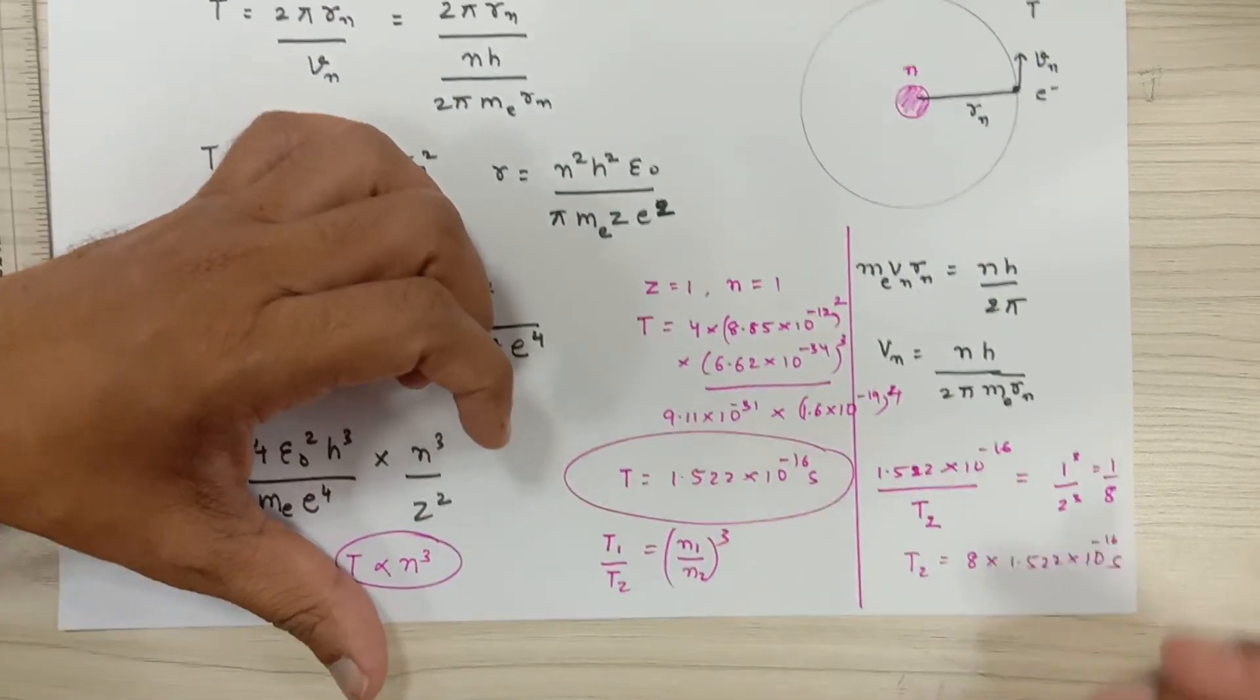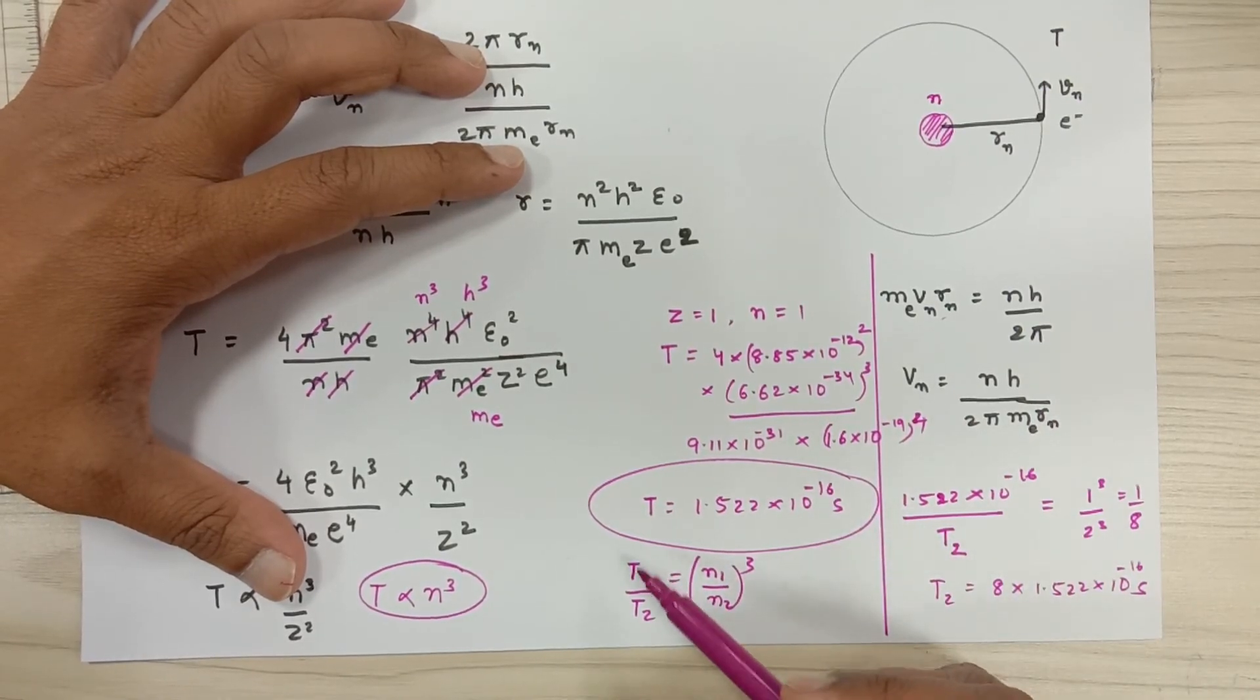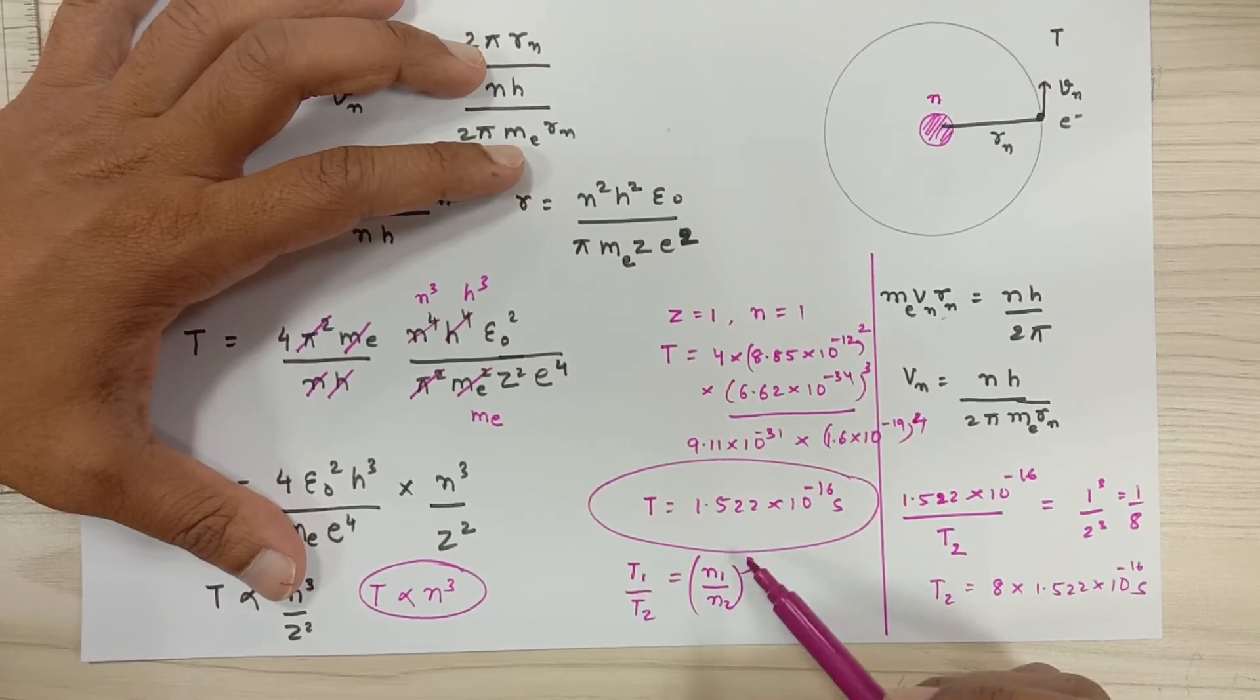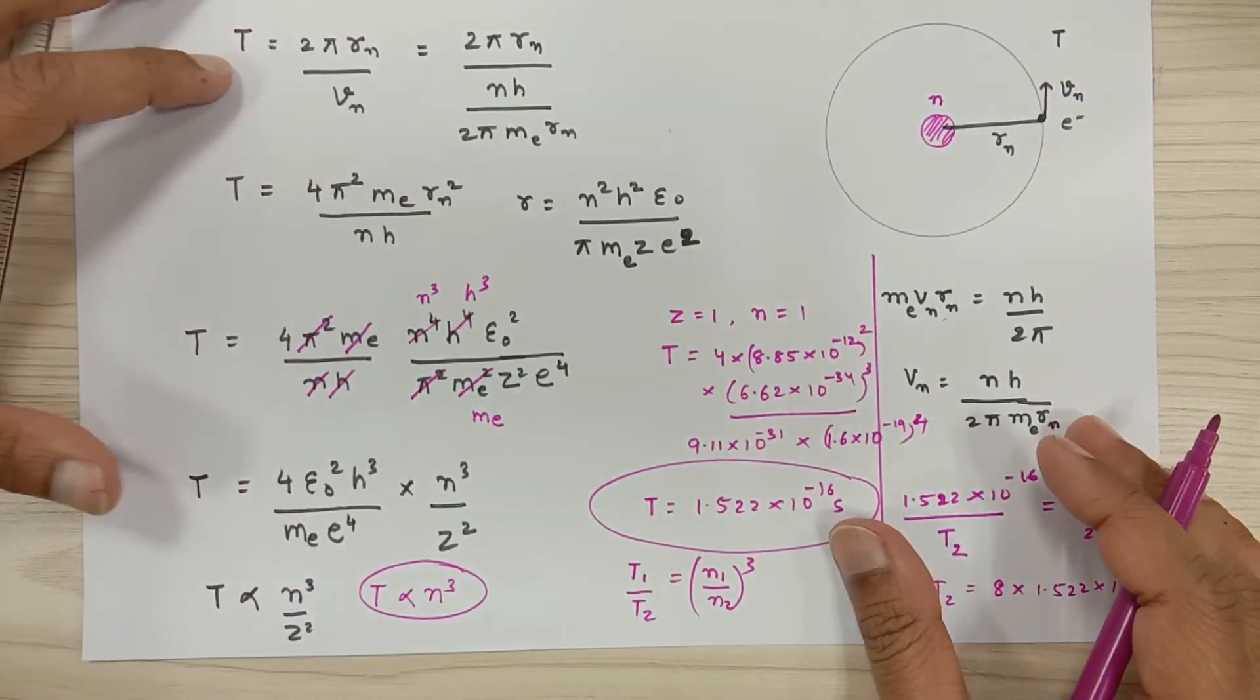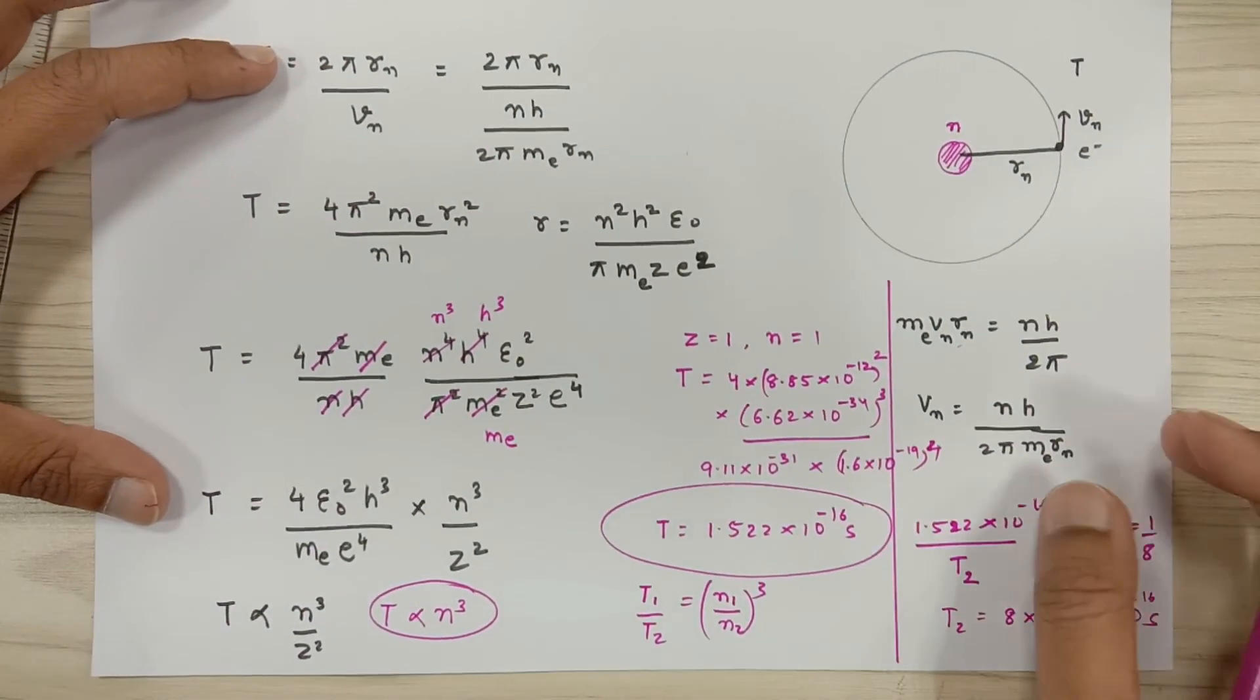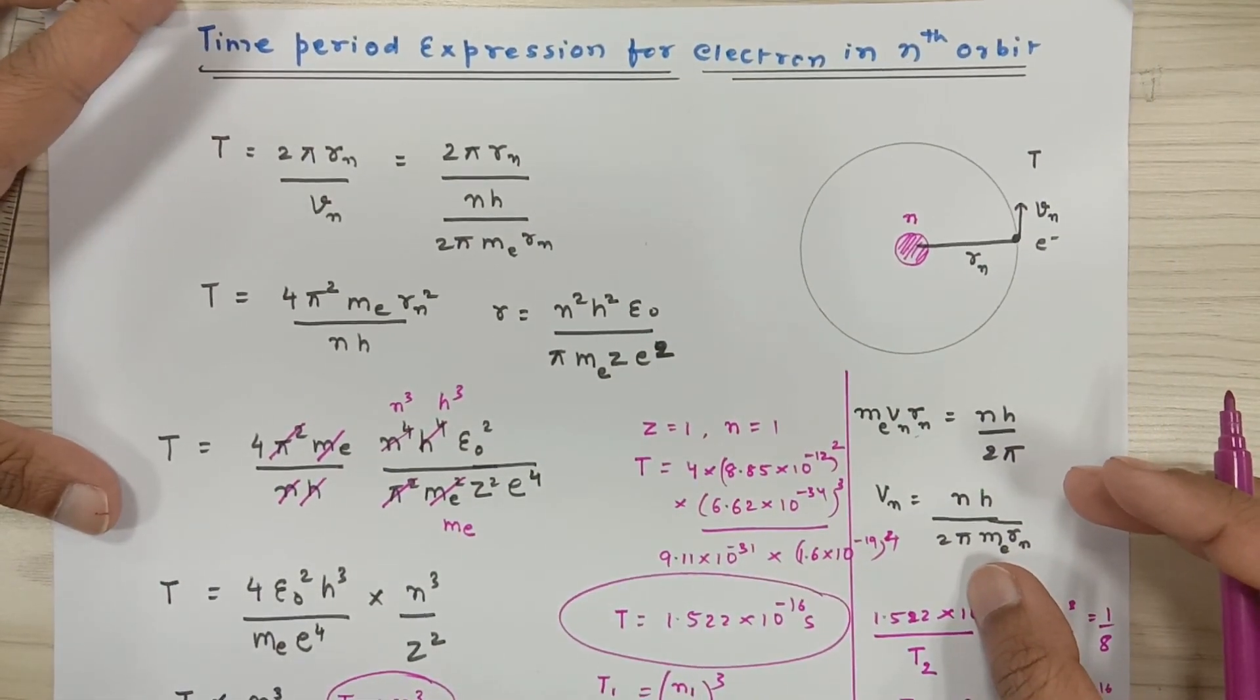In the same way, if you ask me to find out the electron's time period in the third orbit, then I'm going to substitute T₁ upon T₃ equals n₁ upon n₃ whole cube, and 3³ is 27, so simply I will have to multiply this number by 27 in order to find out the electron's time period in the third orbit. So hopefully guys, this works for you. Thank you for watching the video.